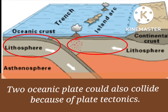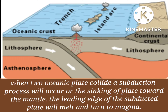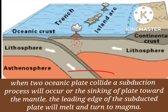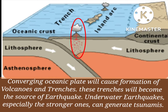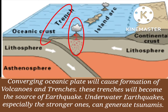Two oceanic plates could also collide because of plate tectonics. When two oceanic plates collide, the subduction process will occur — the sinking of plates towards the mantle. The leading edge of the subducted plate will melt and turn to magma. Addition of volatile material such as water will cause the magma to become less dense, allowing it to rise and reach the crust once again, causing volcanic activities.